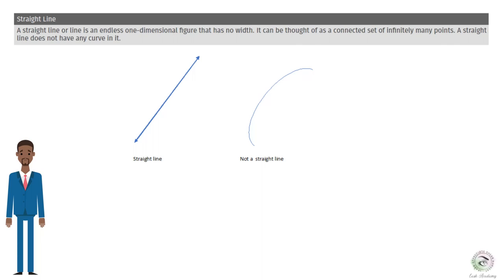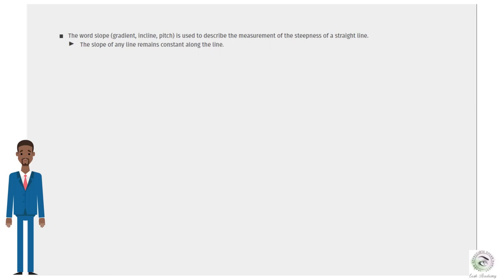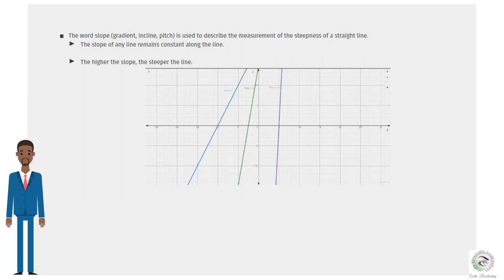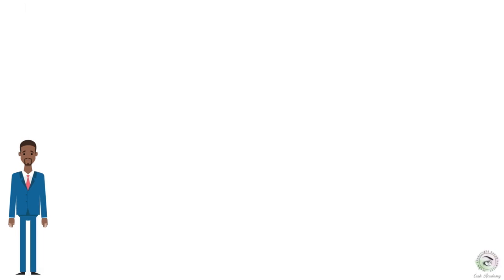The word slope — also called gradient, incline, or pitch — describes the measurement of the steepness of a straight line. The slope of any line remains constant along the line. The higher the slope, the steeper the line. The blue line has a slope of 2, the green line has a slope of 6, and the purple line has a slope of 20. The slope m of a straight line passing through points (x₁, y₁) and (x₂, y₂) is obtained by dividing the difference of y-coordinates by the difference of x-coordinates.